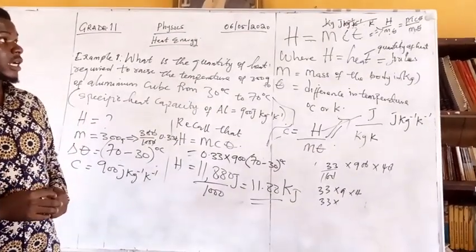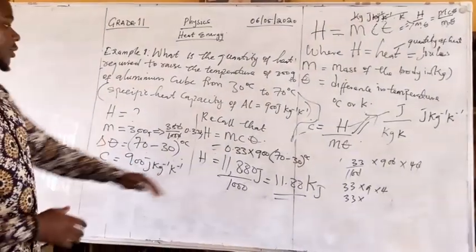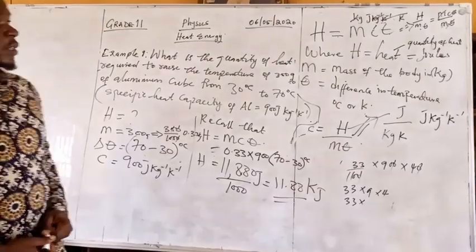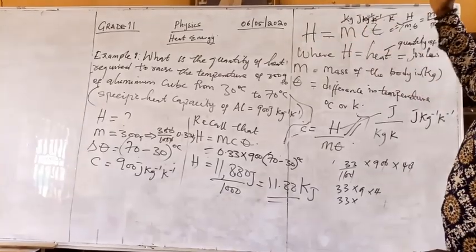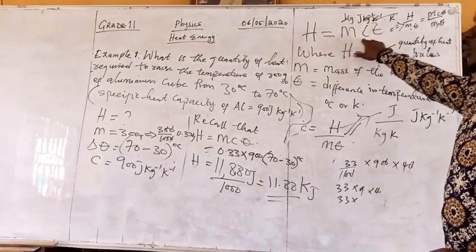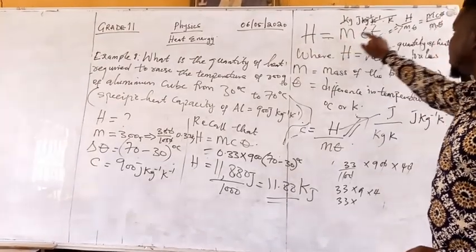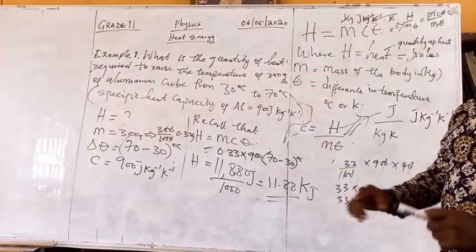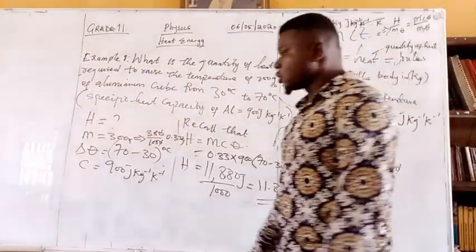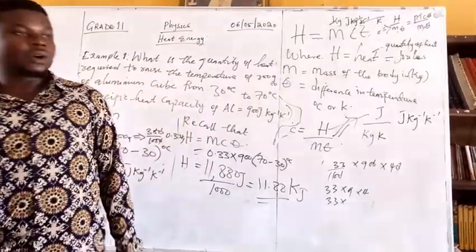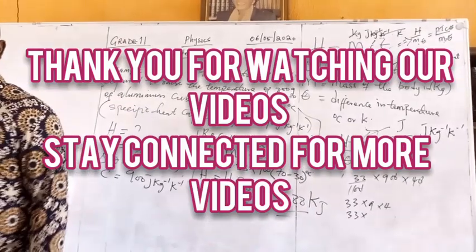We still have other examples we can solve, but the common example you see in this topic is straightforward like this. If you are given different variables, you can look for any unknown by making it the subject of the formula. We will give you assignments for this topic. Thank you.